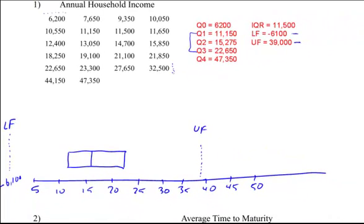The nice thing about your fences is that they tell you where your potential outliers are. So I have two potential outliers. I have one at $44,150 and at $47,350. So I'm going to mark those with little dots. So $44,150 is right here. And $47,350 is about right here.